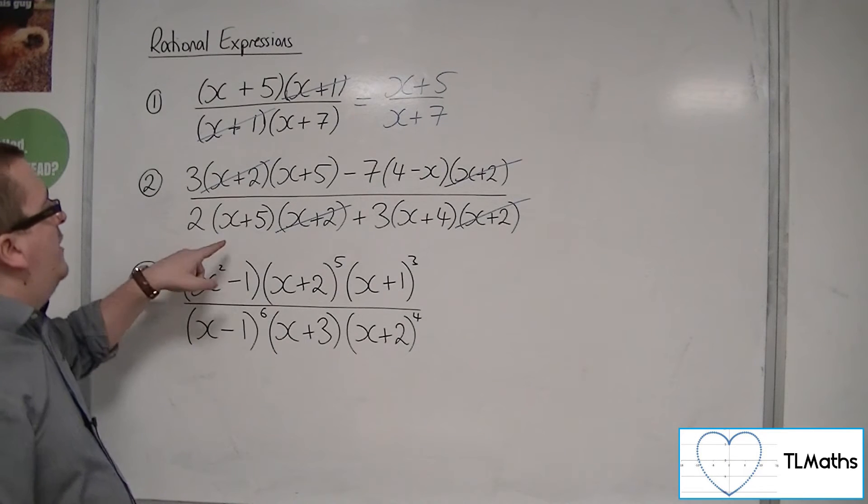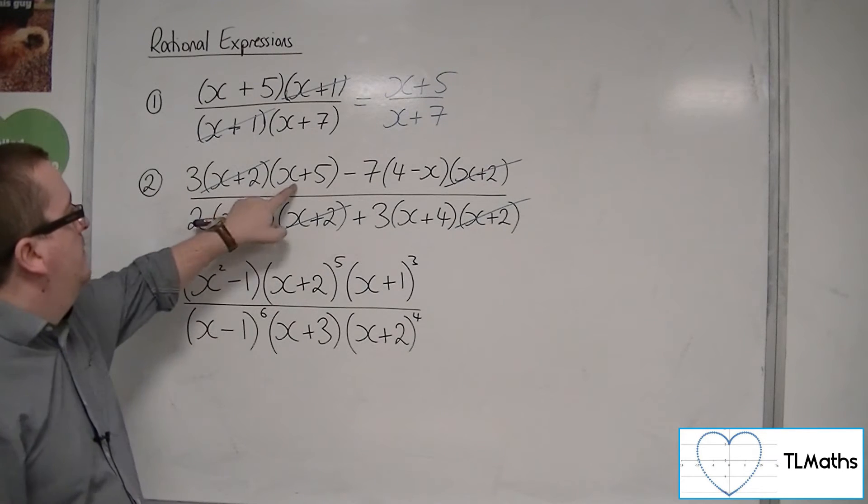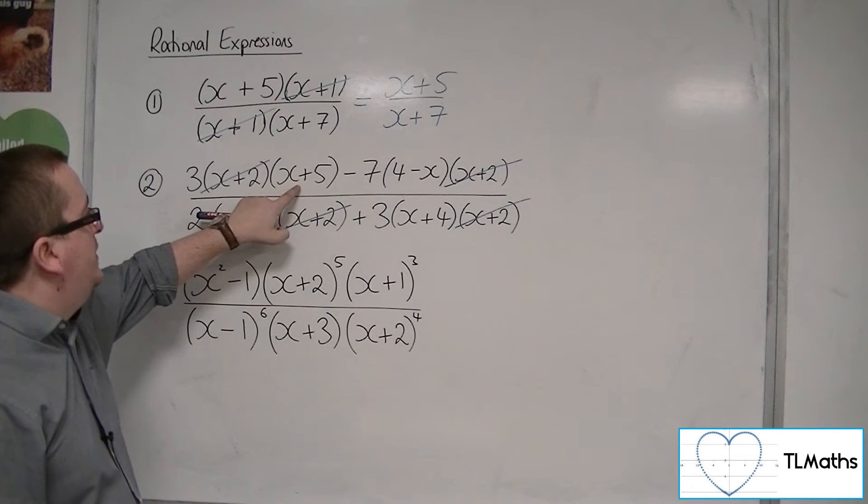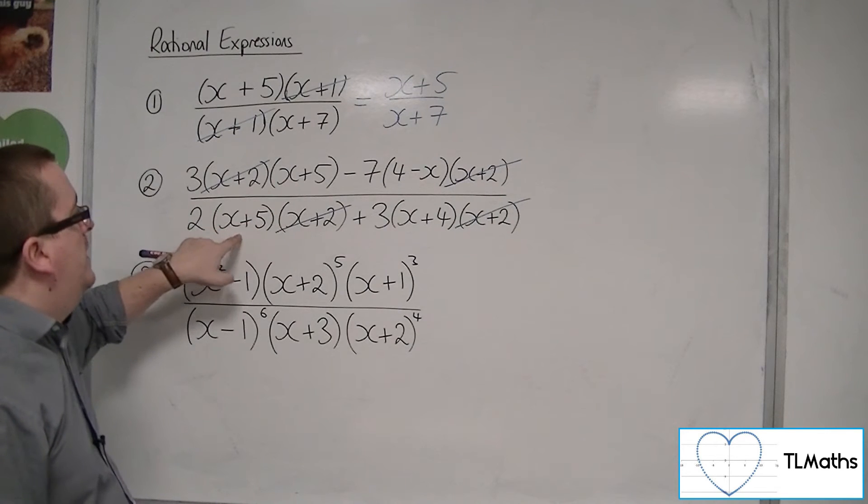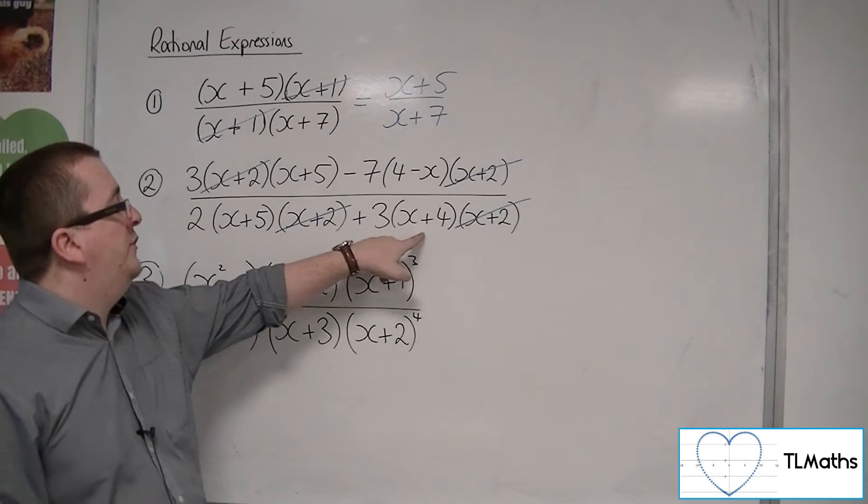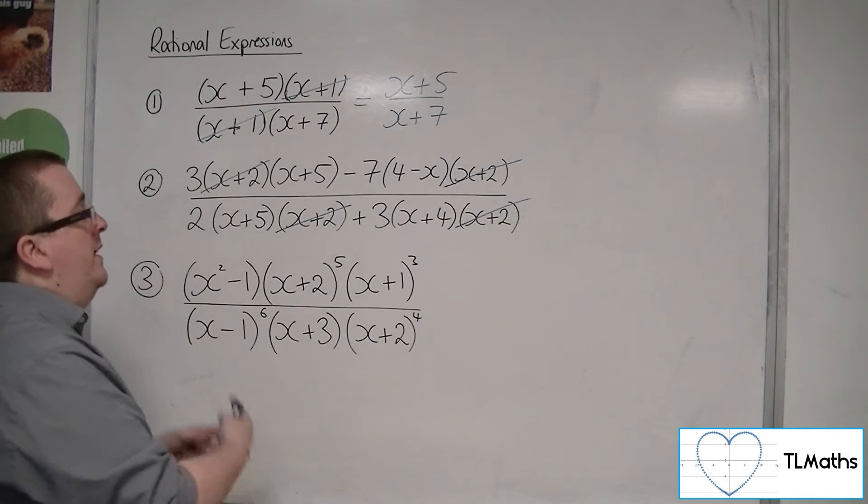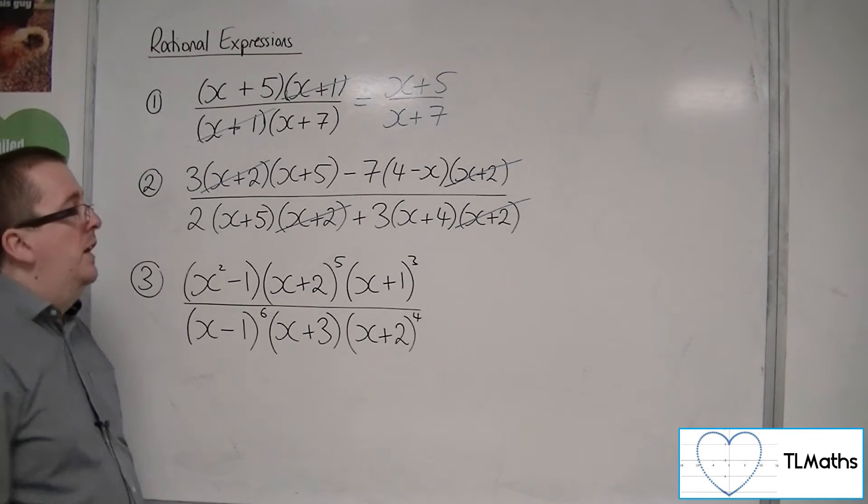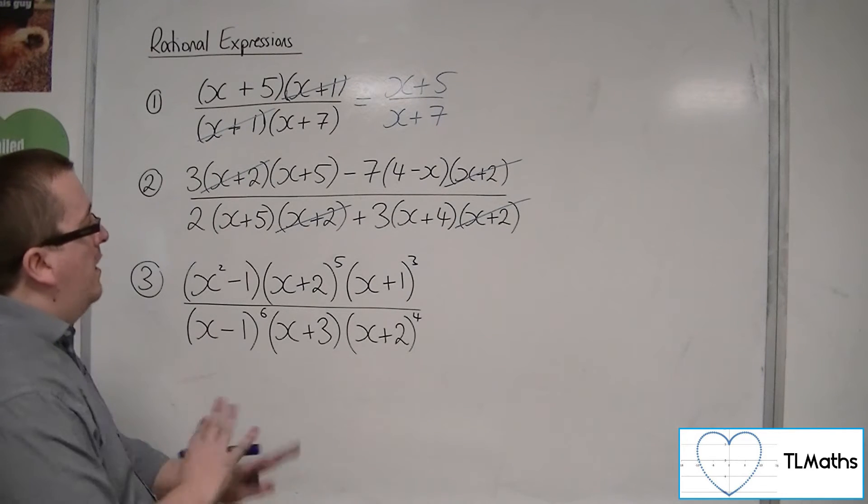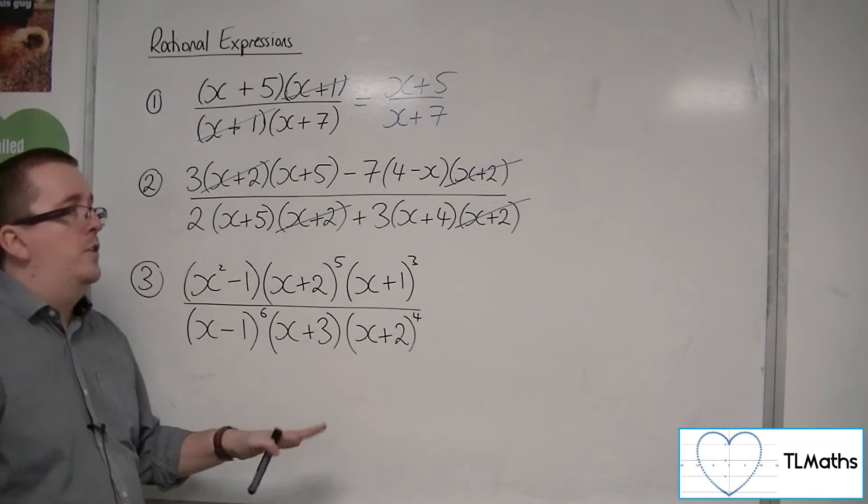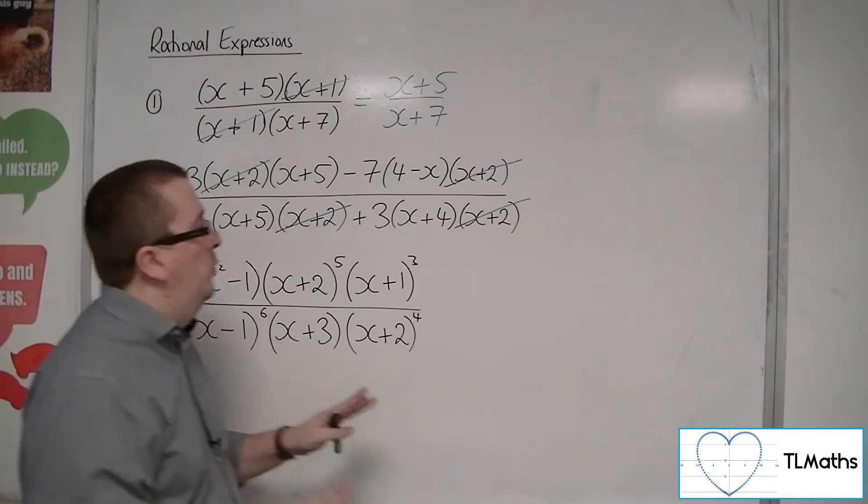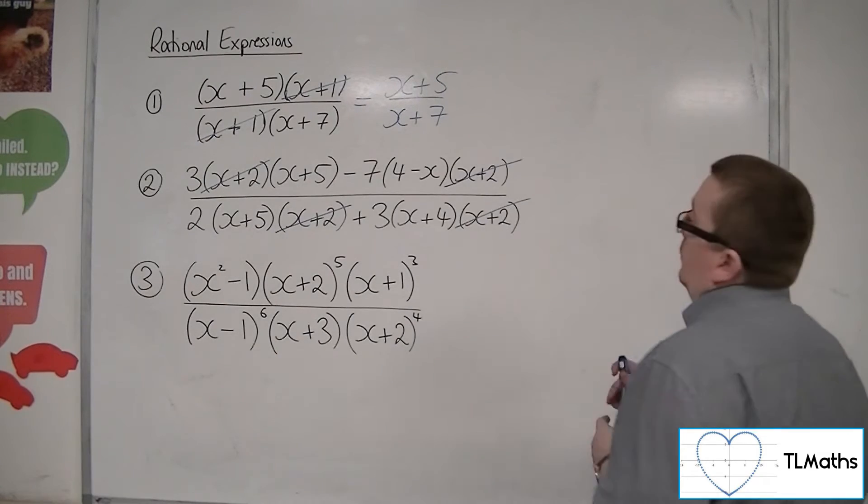Now the x plus 5s there appear in the numerator into that term and that term. But because the x plus 5 doesn't appear there or there, it is not a common factor of the whole numerator or the whole denominator. And so I can't cancel through by it. It must be common to all of the top and all of the bottom.